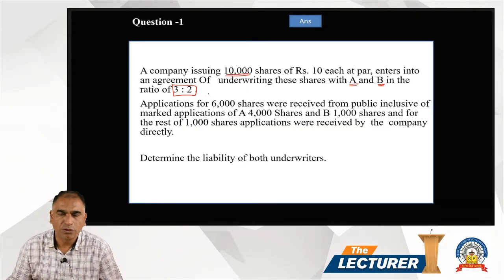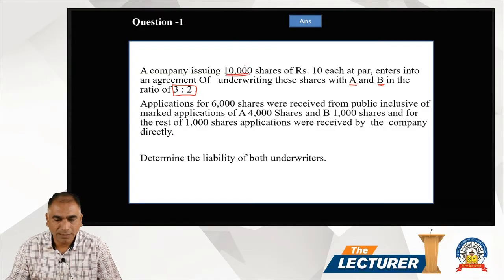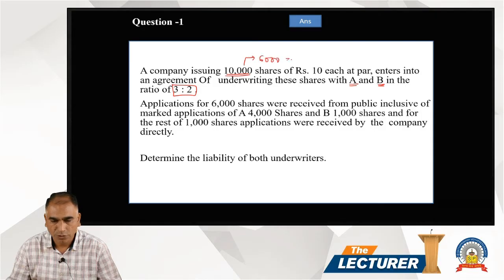So these 10,000 shares, total liability A and B bear in the ratio of 3:2. Applications were received for 6,000, so 10,000 minus 6,000 gives you a 4,000 share deficit.